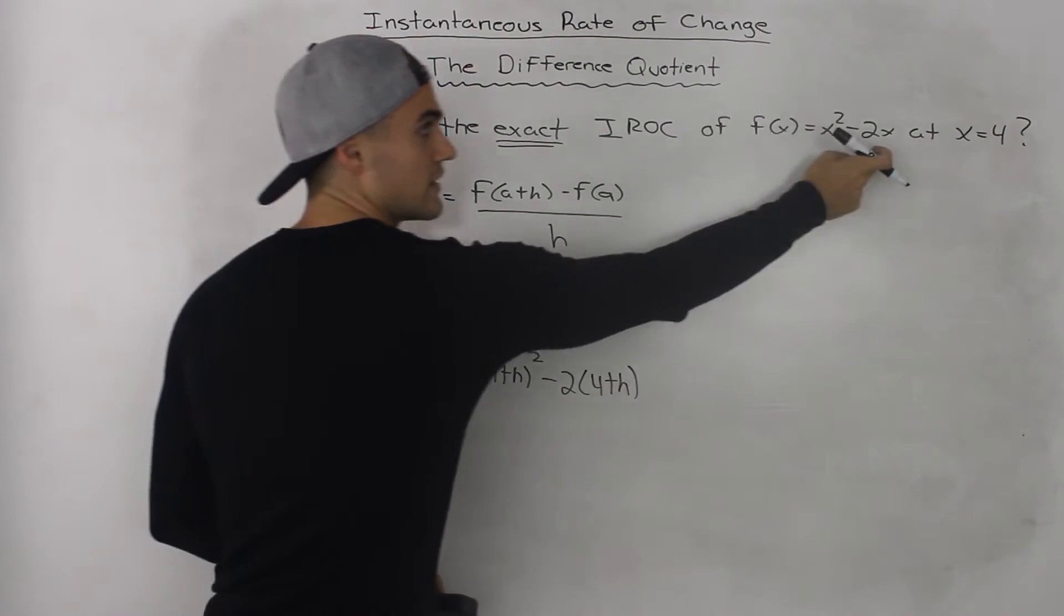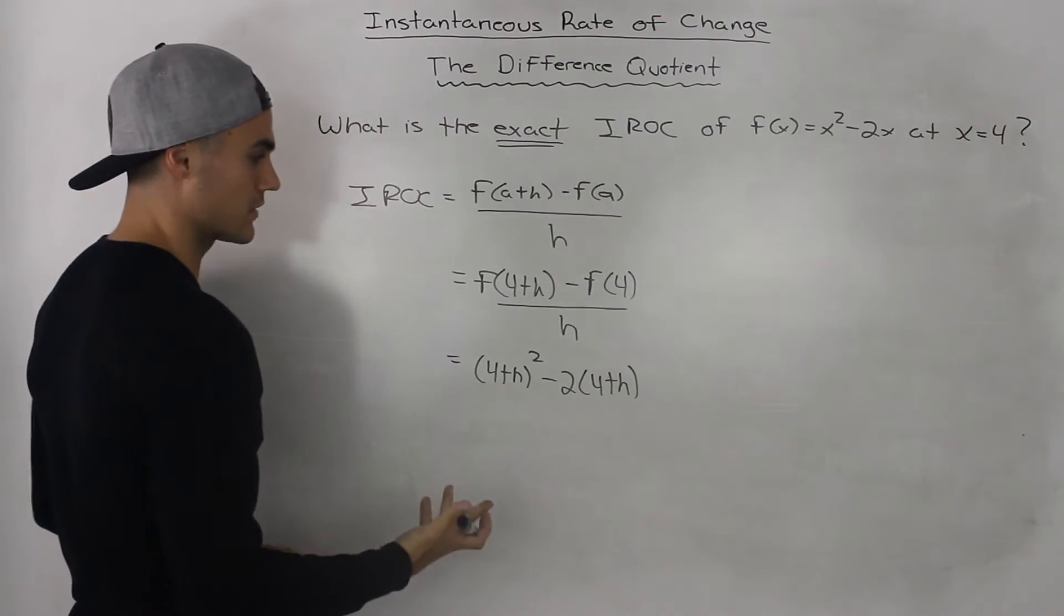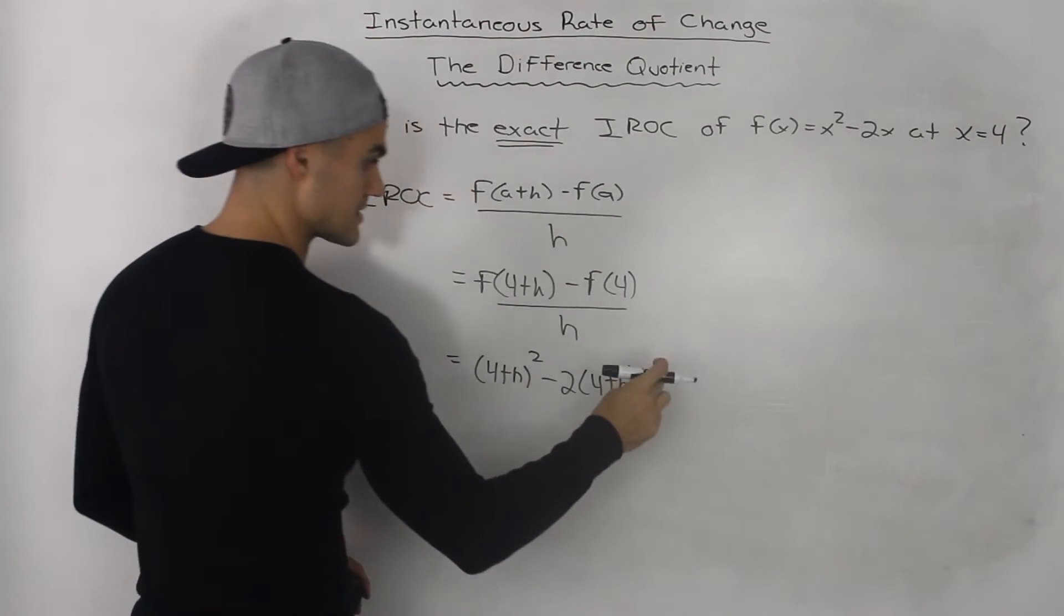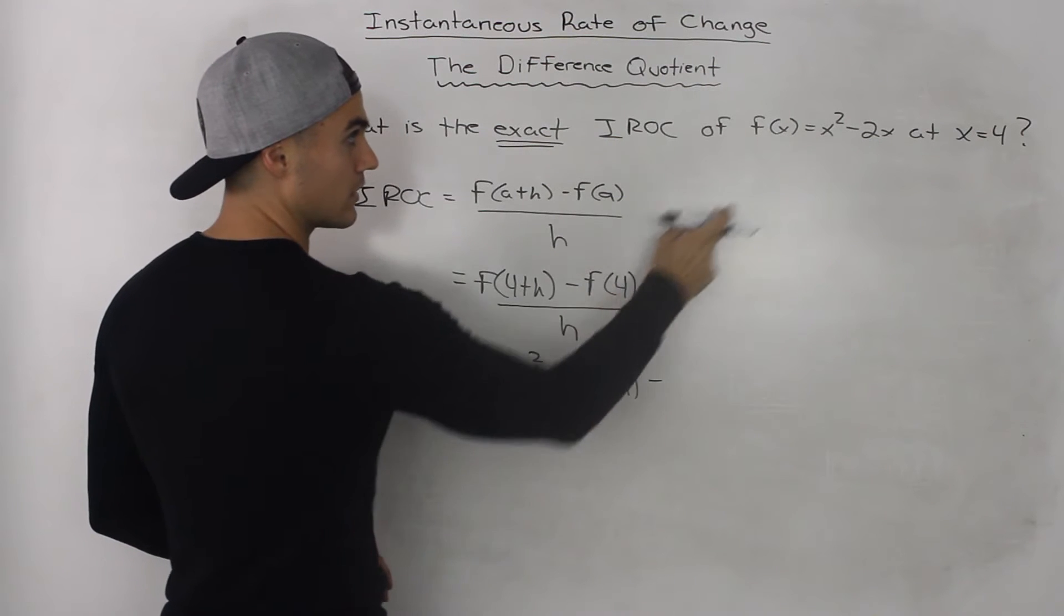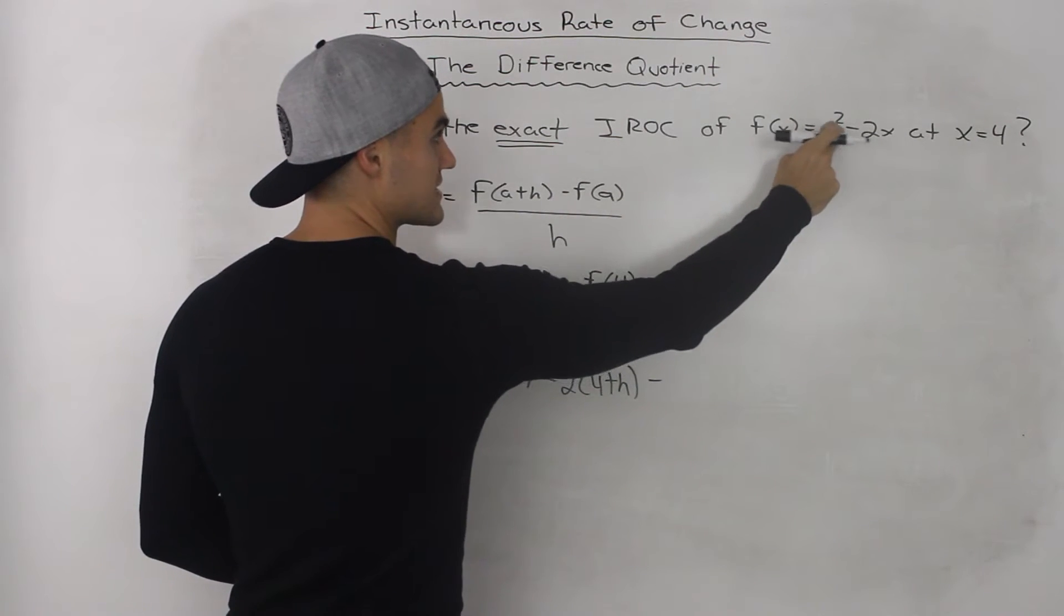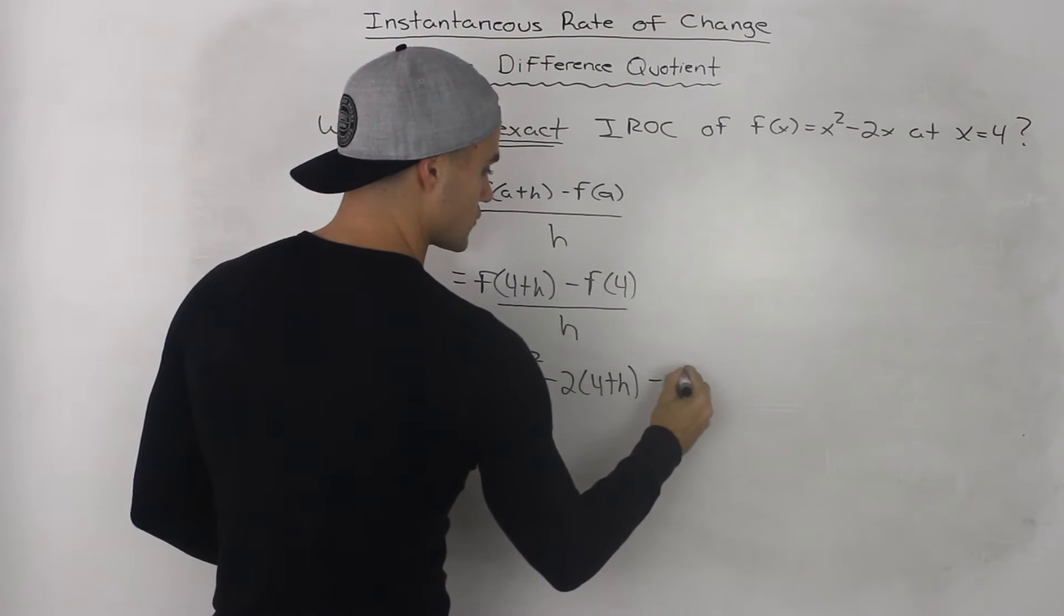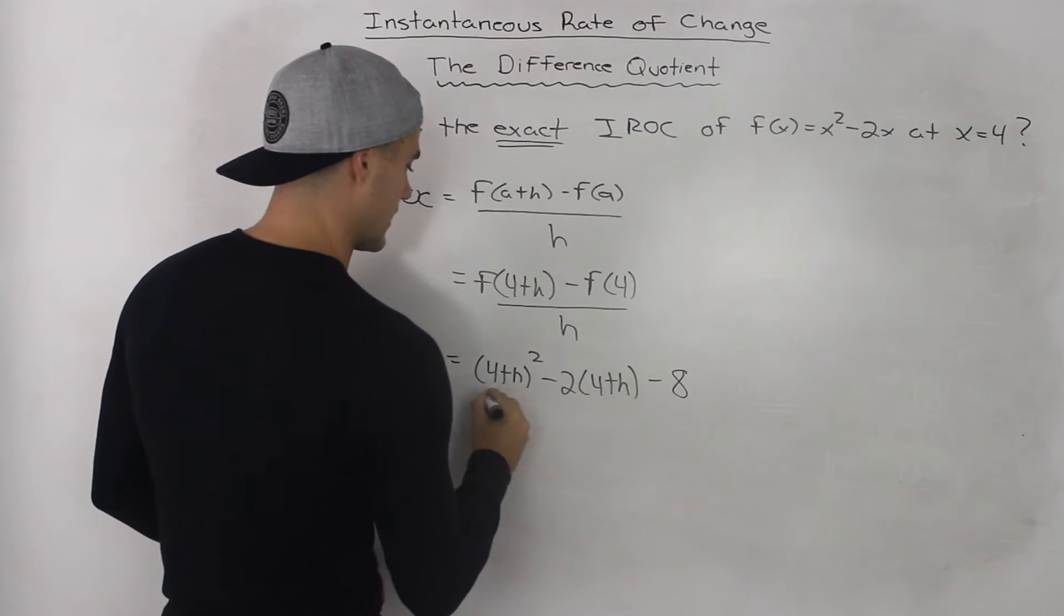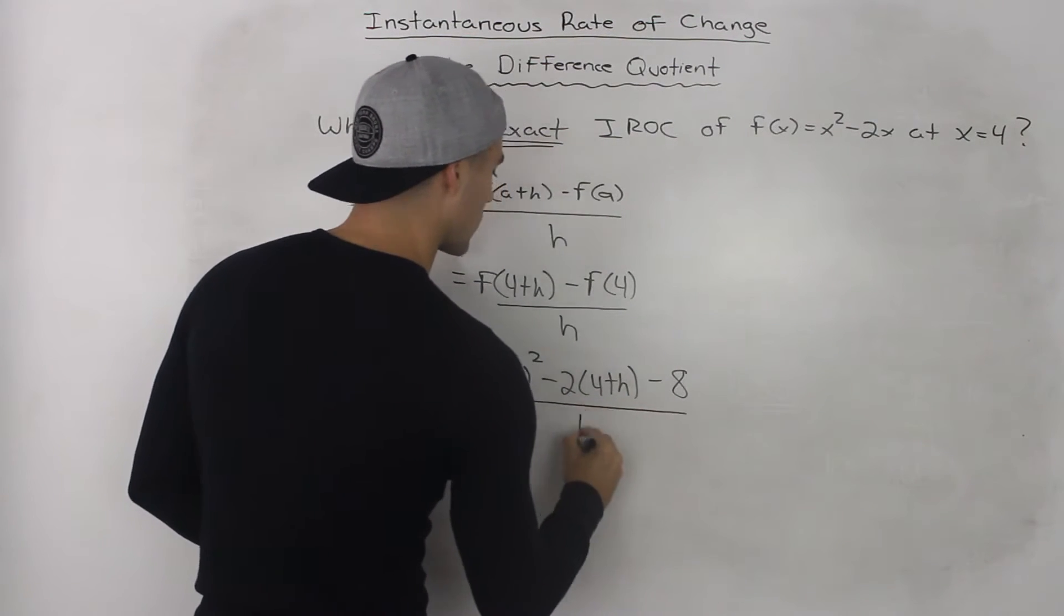I just plugged in 4 plus h for the x's in the function that we were given minus f of 4. If we plug in 4 for the x values in the function, we would get 16 minus 8 which would just be 8. And this is still all over h.